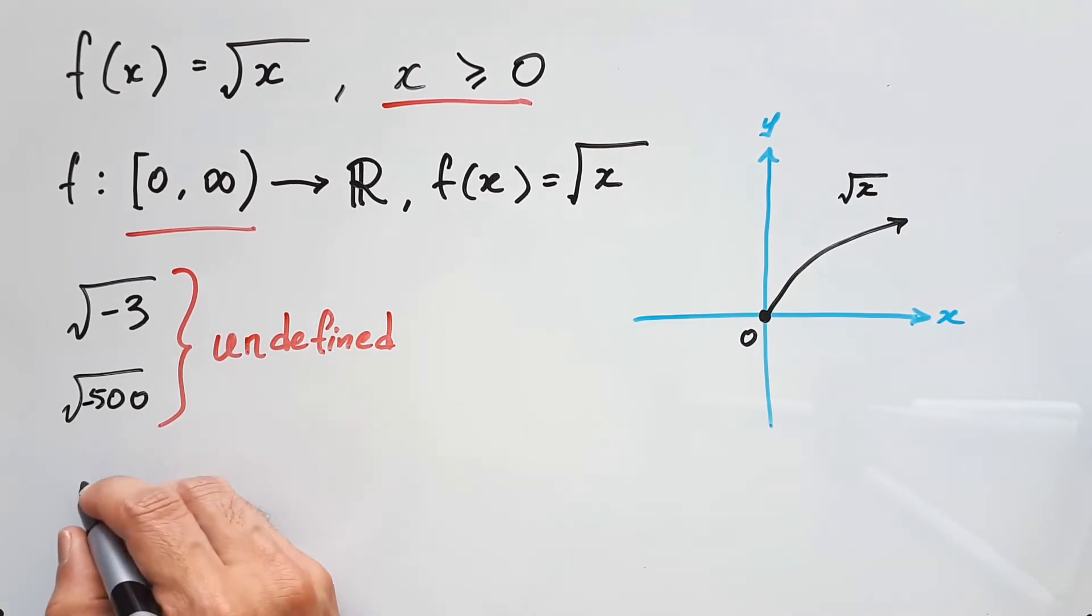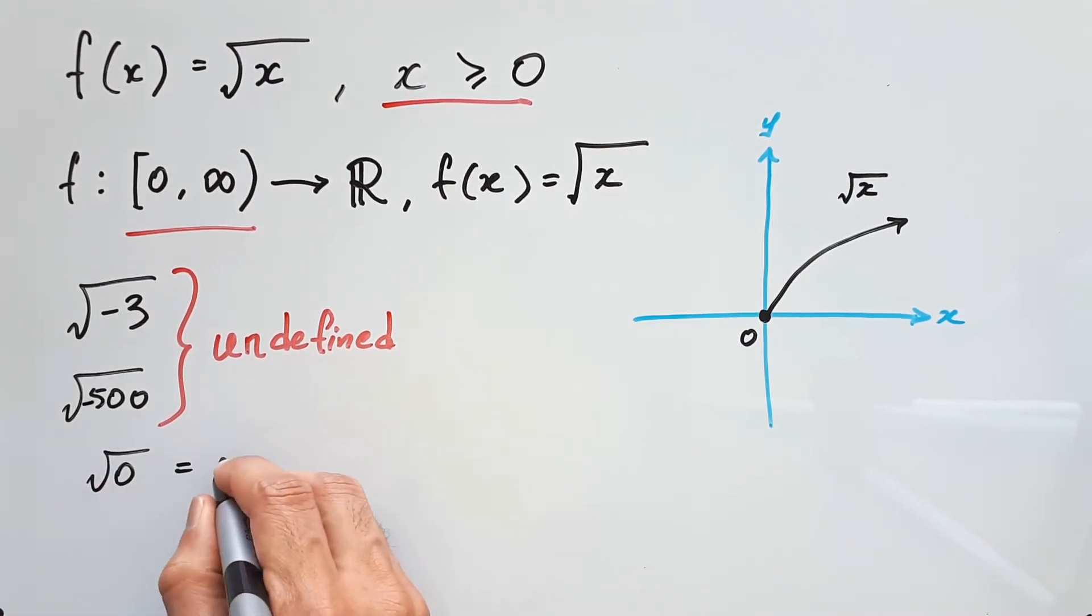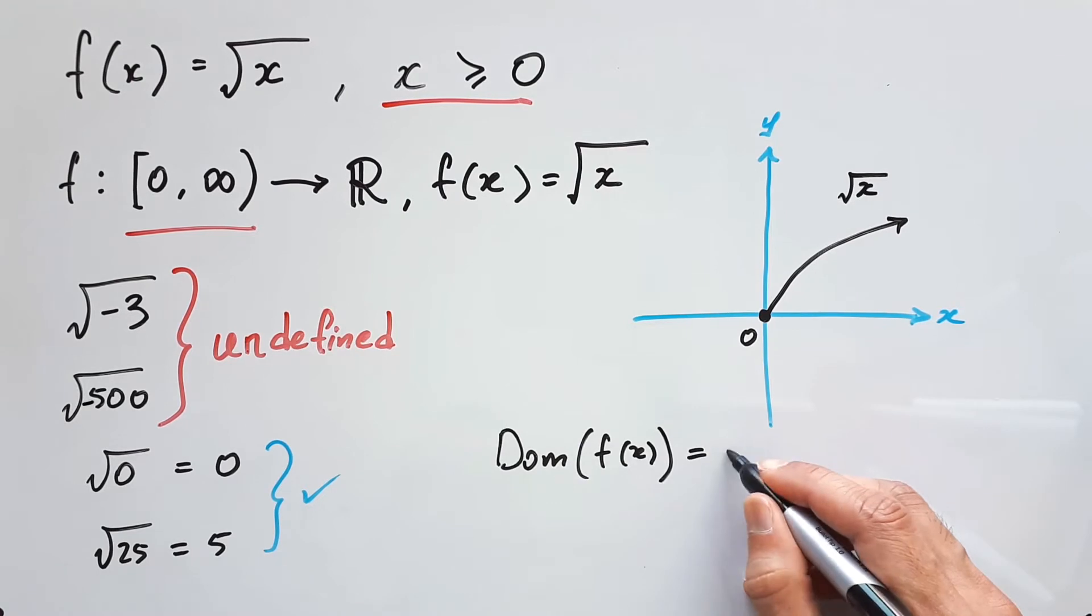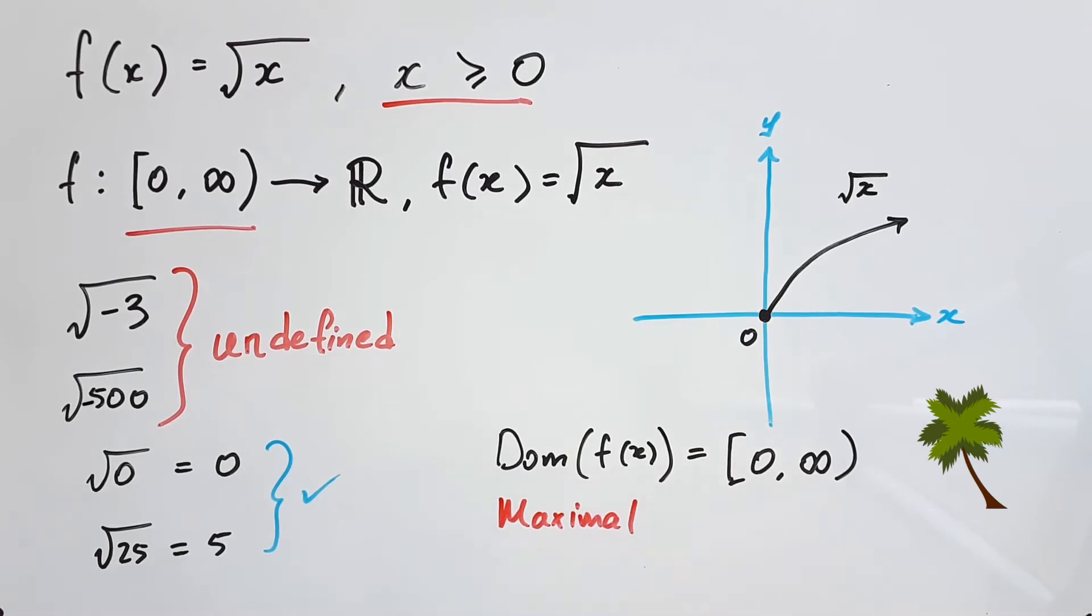Whereas if you took the square root of 0, the answer is still 0, since 0 squared is 0. Or if you took the square root of 25, the answer is 5. And all this is what we would say is naturally occurring. These are natural limitations upon this rule. We can say that the domain of f(x) is going from 0 to negative infinity, including 0, and since the limits are natural, this is known as a maximal domain.